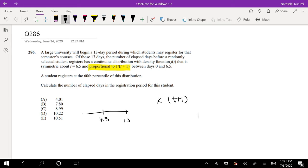I'm actually going to write it like this: t plus 1 to the negative 1. And so that graph looks like this, right? And it's scaled up by some constant k. At 6.5 it reflects down because it's symmetric. Sorry about that weird graph. Okay, and we're trying to find the 60th percentile. So like this part right here, 60th percentile.